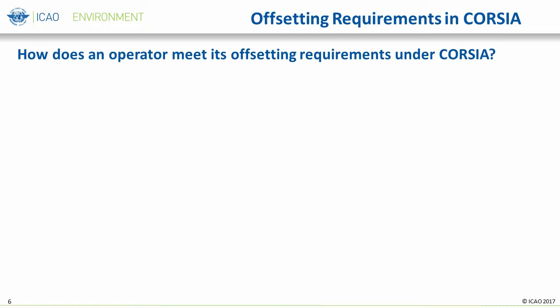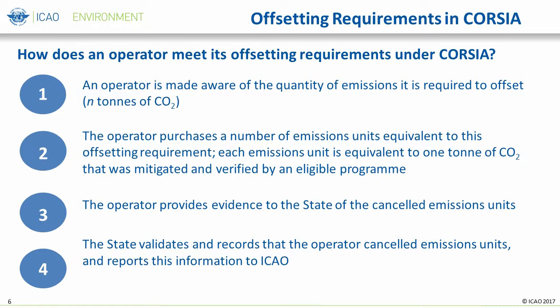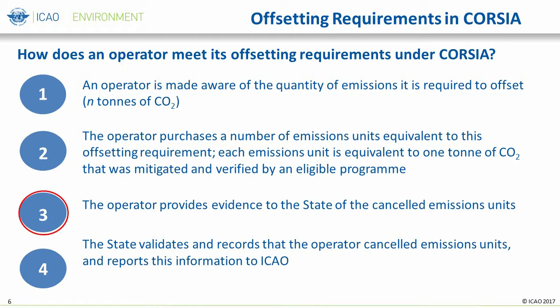If an aircraft operator understands the amount of offsetting requirements every year from 2021, what would be the next step? How does an operator meet its offsetting requirements under CORSIA? This slide provides a high-level overview of the process. First, ICAO provides the sector growth factor to states and operators, which is multiplied by the operator's emissions coverage by CORSIA in that year — giving the quantity of CO2 emissions the operator is required to offset. Second, the operator purchases a number of emissions units equivalent to this offsetting requirement. Each emissions unit is equivalent to one ton of CO2 that was mitigated or verified by an eligible program.